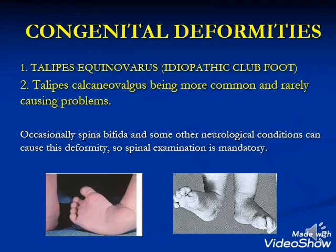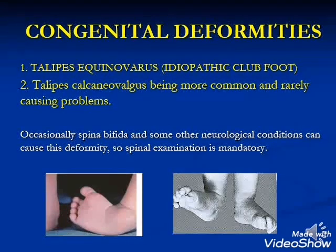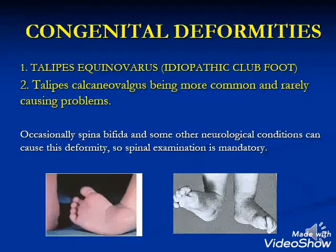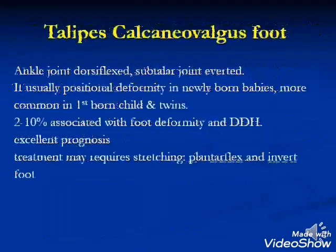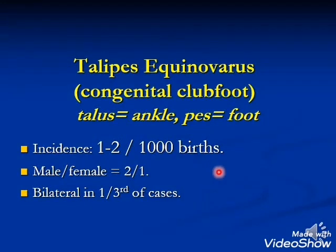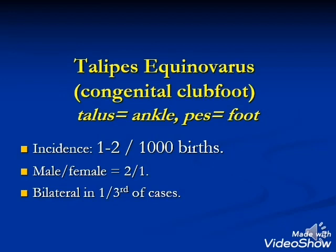Congenital deformities: the first important condition is talipes equinovarus, also called idiopathic club foot. The second is talipes calcaneovalgus, which is less common but more benign and rarely causes problems. Occasionally, spina bifida and other neurological conditions can cause this deformity, so spinal examination is mandatory. Talipes equinovarus has an incidence of one to two per thousand births; the male-to-female ratio is two to one. In one third of cases it is bilateral.